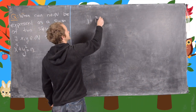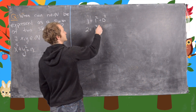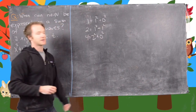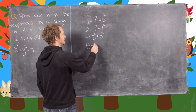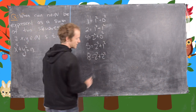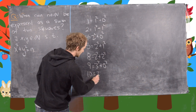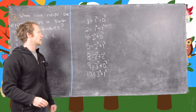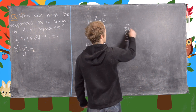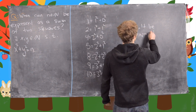Obviously 1 is 1 squared plus 0 squared, so that goes in the yes column. And then 2 is equal to 1 squared plus 1 squared, so that's okay as well. 4 is equal to 2 squared plus 0 squared. And then 5 is 2 squared plus 1 squared. And then 8 is 2 squared plus 2 squared. 9 is 3 squared plus 0 squared. And finally 10 is 3 squared plus 1 squared. So these are all the numbers between 1 and 10 which can be expressed as a sum of two squares. And it turns out that 3, 6, and 7 can't be expressed in this way.